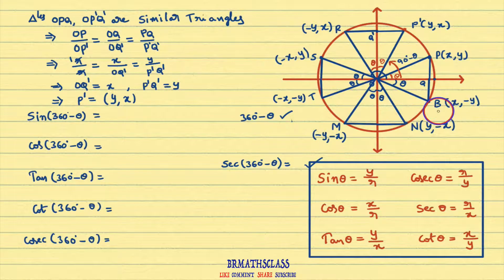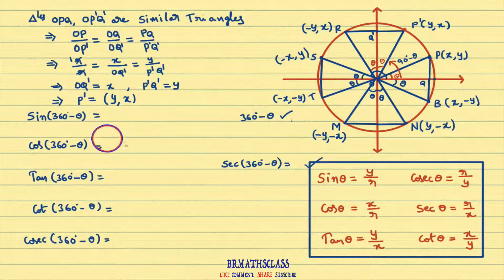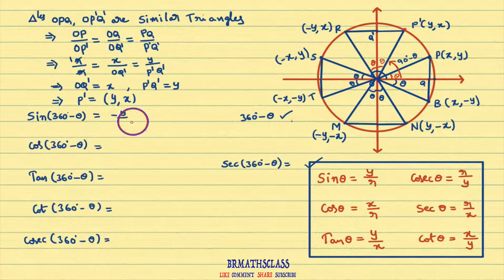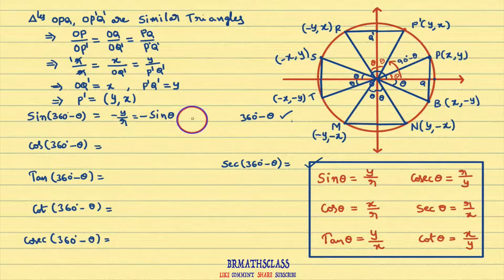Now we know the coordinates of point B and we know that OB makes an angle 360 degrees minus theta with the positive direction of the x-axis, so we can write all the trigonometric functions. Sin theta is defined as y coordinate divided by radius. So sin(360° − θ) equals the y coordinate of point B divided by the radius of the circle. The y coordinate of point B is minus y, so that equals minus y by r. Since y by r is sin theta, therefore sin(360° − θ) = −sin θ.